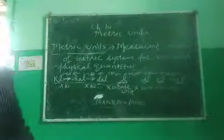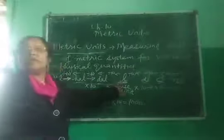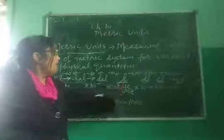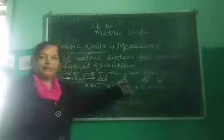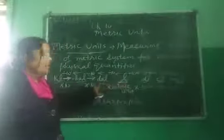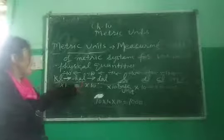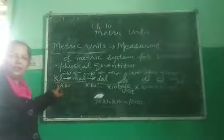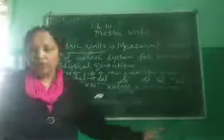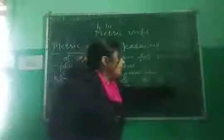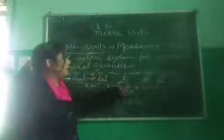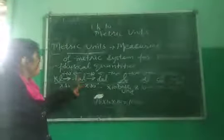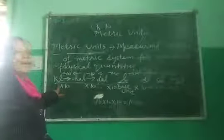When you take gram as the base unit in place of liter, it will be milligram, centigram, decigram, gram, decagram, hectogram, and kilogram. When you take meter, it will be millimeter, centimeter, decimeter, meter, decameter, hectometer, and kilometer.